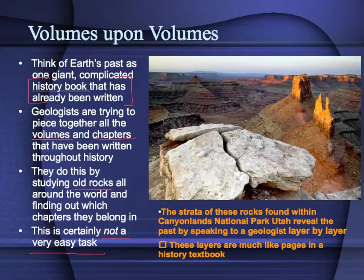One of the places that geologists might go would be Canyonlands National Park in Utah. You can see all the different rock layers, all the different strata there. They're almost like pages in a book — they read like pages in a book. You can discern information about what was happening during the particular times that those layers were being formed and deposited.